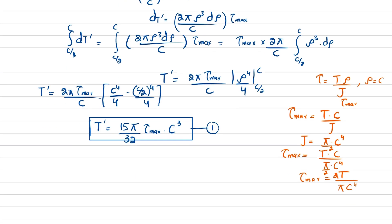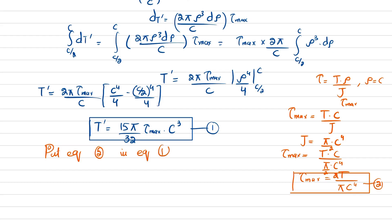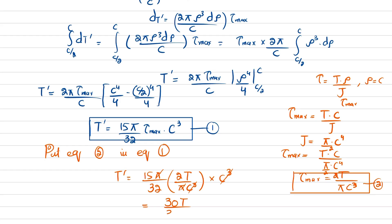Substituting equation 2 into equation 1: T' = (15π/32) · (2T / π·c³) · c³. The π and c³ terms cancel, leaving T' = (15 × 2)T / 32 = 30T/32.